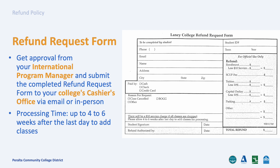If you need to request a refund, you need to get approval from your DSO, then visit your college's cashier's office website to complete the request for a refund form. Depending on how busy the cashier's office is, it can take up to four to six weeks after the last day to add classes to process a refund. The funds will be sent back to your original form of payment, except for cash payments, which will be refunded as a check and mailed to you.